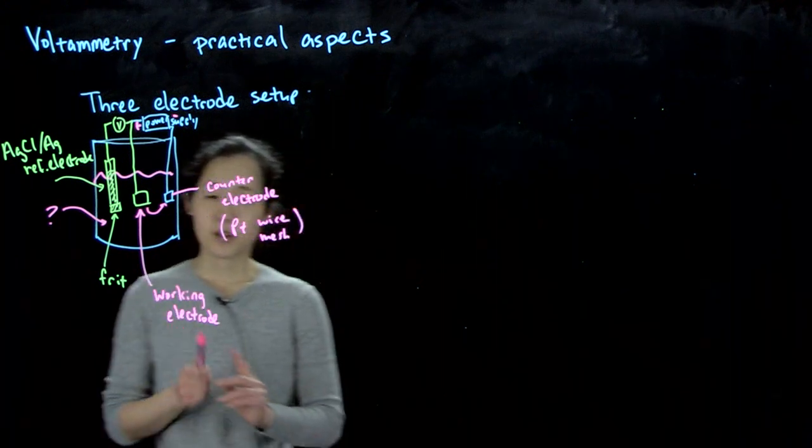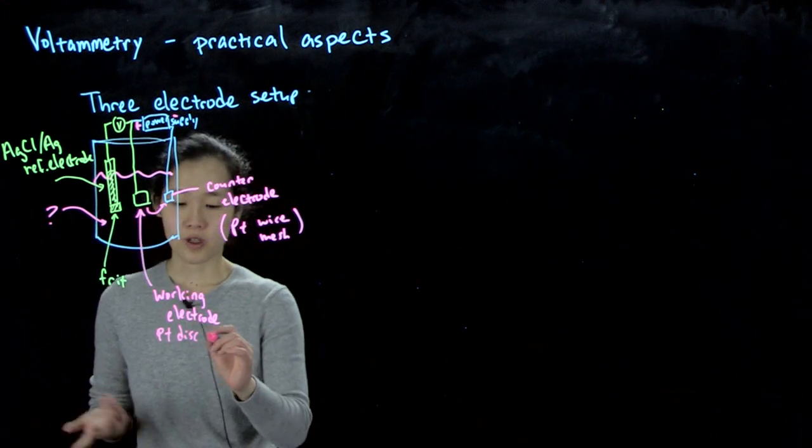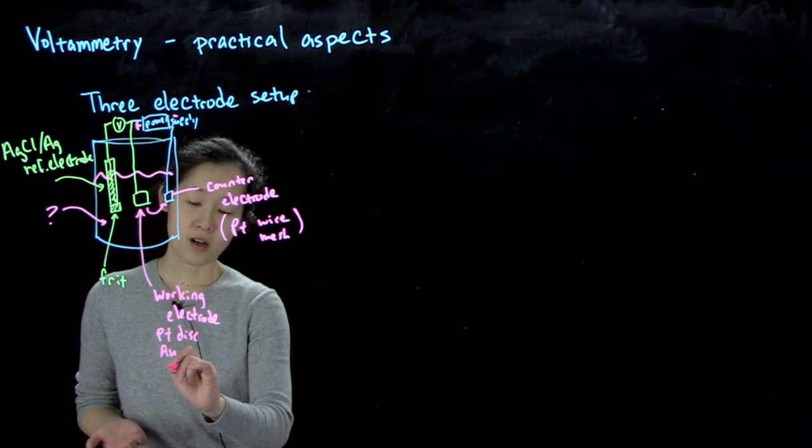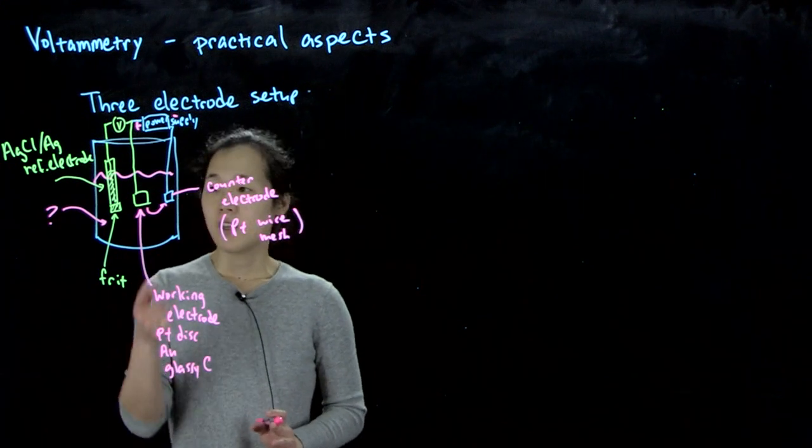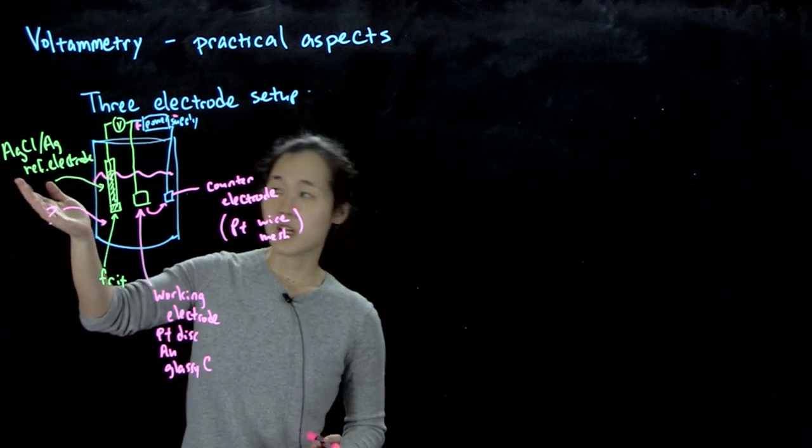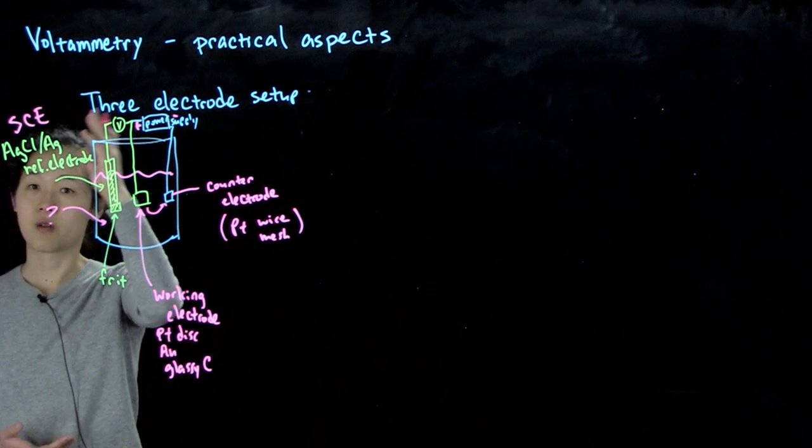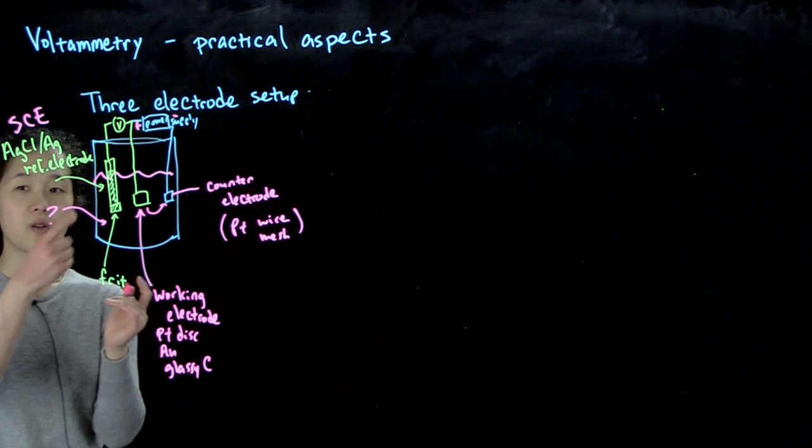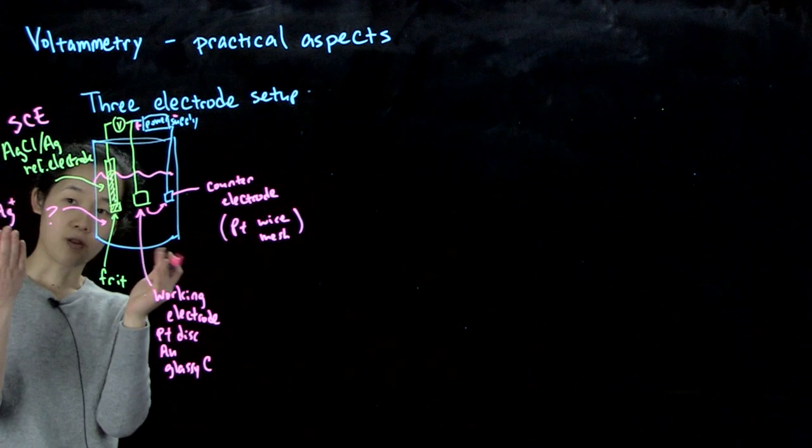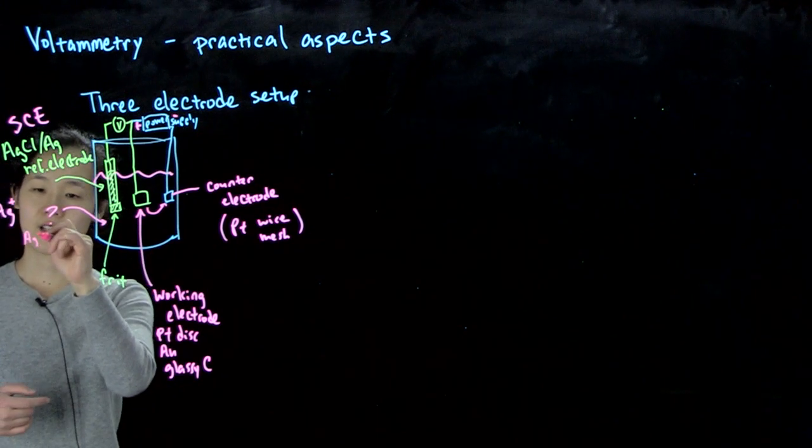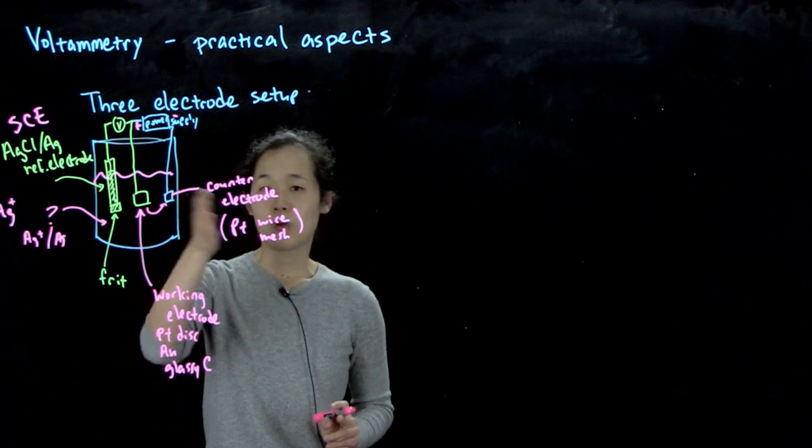The working electrode could be a number of materials. Often you might use a platinum disk in a plastic tube, or you could use gold, glassy carbon, carbon, or graphite. The reference electrode depends on what solution you're doing. Silver-silver chloride, or the SCE, the saturated calomel electrode, which is mercurous chloride to mercury. In organic solvents, sometimes you'll use silver nitrate over silver metal. You still need the reference electrode in order to know what potentials you're at.